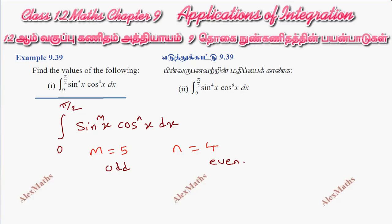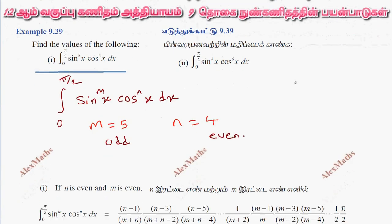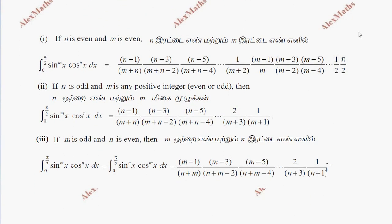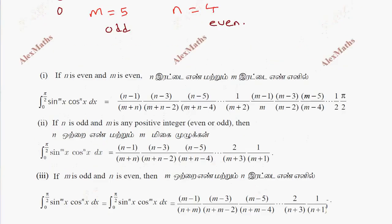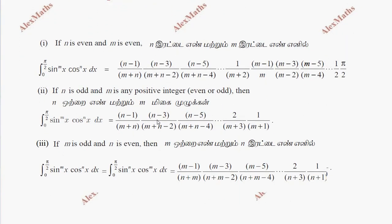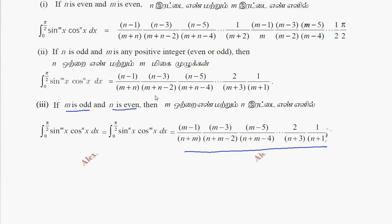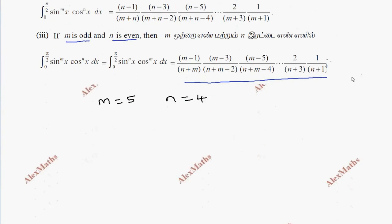If we compare, what formula applies? Let's look at the formula list. So n is equal to odd — if we compare, n is equal to even. Here m is equal to 4, n is equal to 5, and n is equal to 4. That is, substitute for number 1.